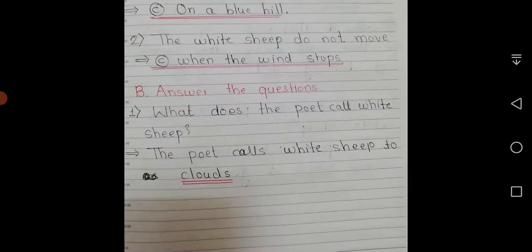Then B, answer the questions. First question, what does the poet call white sheep? And answer is, the poet calls white sheep to clouds.